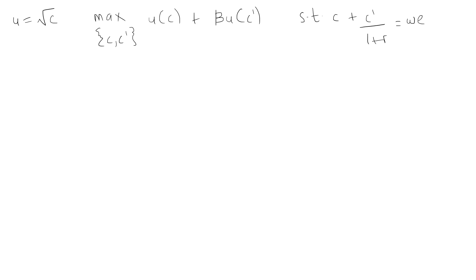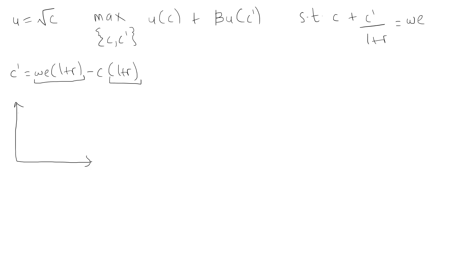This expression can be rewritten in terms of c prime. So c prime is equal to we times 1 plus r minus c times 1 plus r. This term is the intercept and minus 1 plus r is the slope. This is our budget line and this is our indifference curve, so we are trying to find the optimal point where the slope of the indifference curve equals the slope of the budget line.